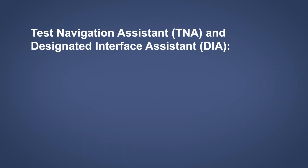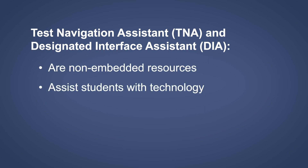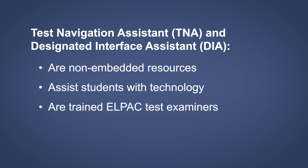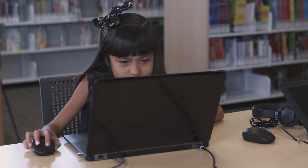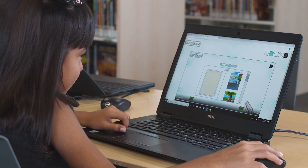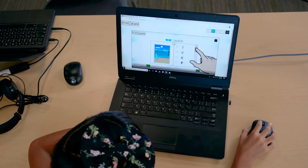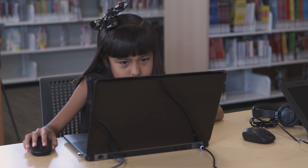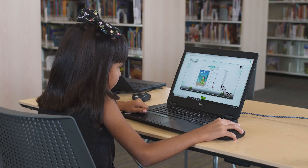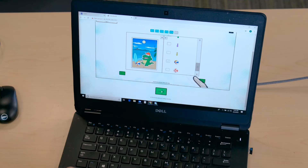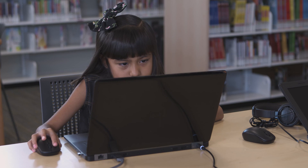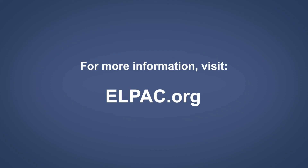To recap: both a Test Navigation Assistant and a Designated Interface Assistant are non-embedded resources that assist students with the technology and navigation of the computer-based ELPAC. A trained ELPAC test examiner serves as the resource in both instances. If you are unsure of a student's computer skills, the Technology Readiness Checker for Students, or TRACS, can be used to gauge a student's familiarity with technology features. This game-like tool has students use navigation features used in the ELPAC and can help you determine if a student might need a TNA or DIA during ELPAC testing. For more information about student accessibility resources and test settings, visit ELPAC.org.